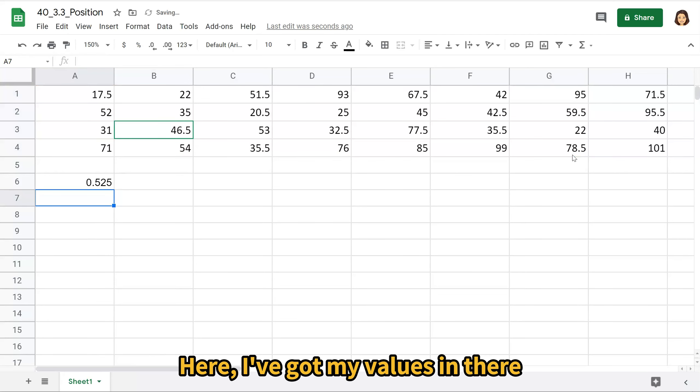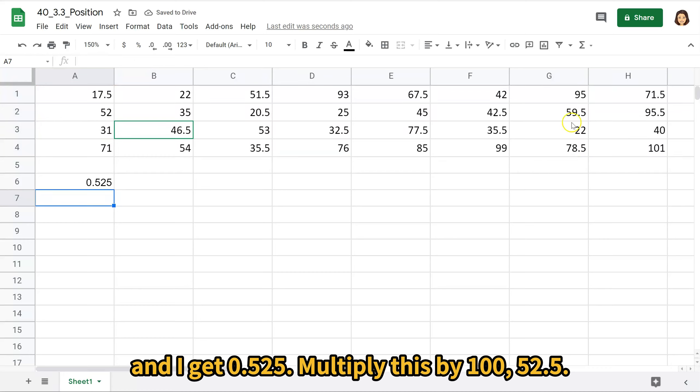Here I've got my values in there and I get 0.525. Multiply this by 100, 52.5. The 53 is at the 53rd percentile.